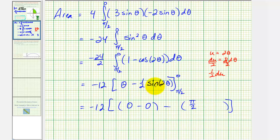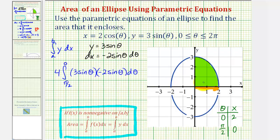and then minus one-half times sine pi. Well, sine pi is also zero. Notice how this simplifies to negative 12 times negative pi over two, which is equal to six pi. So six pi square units would be the area of the ellipse, as we see here.